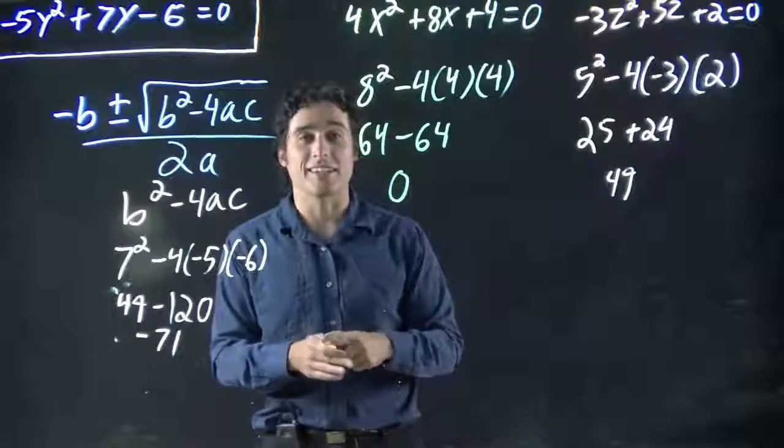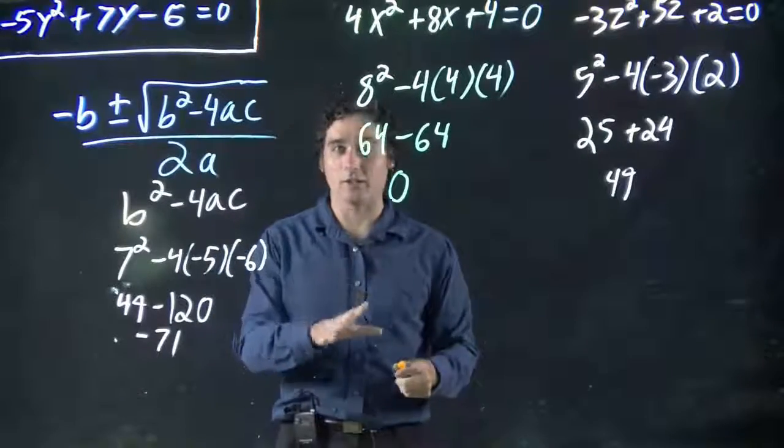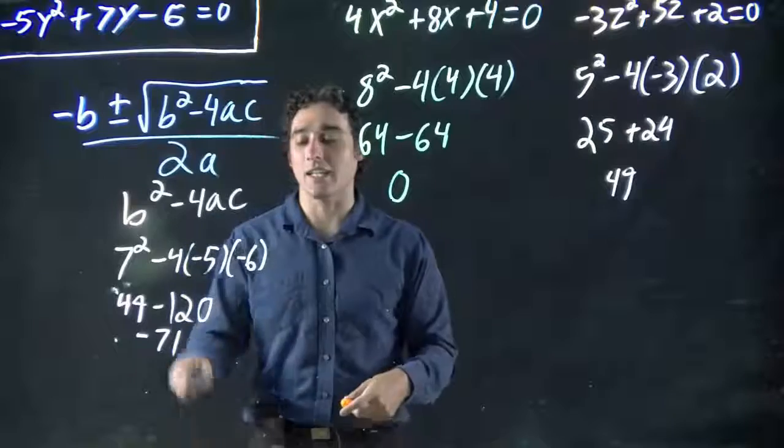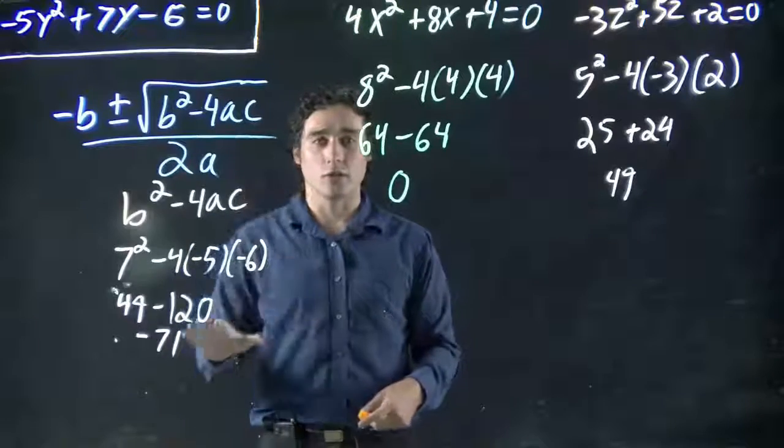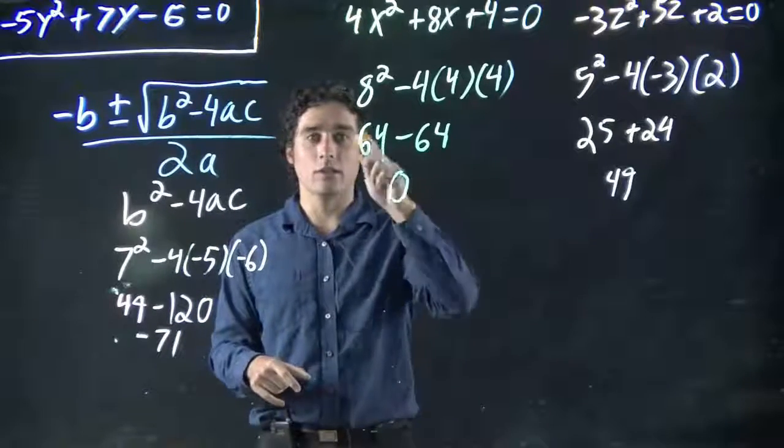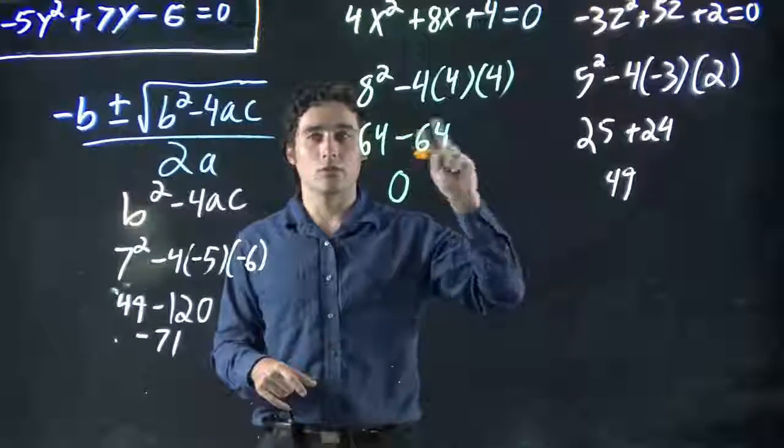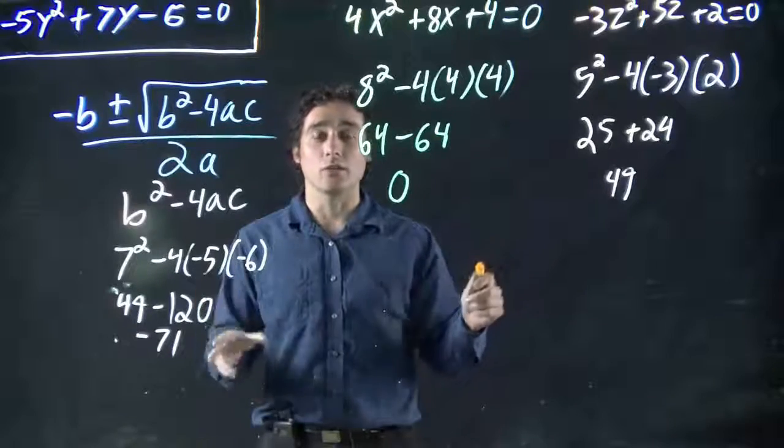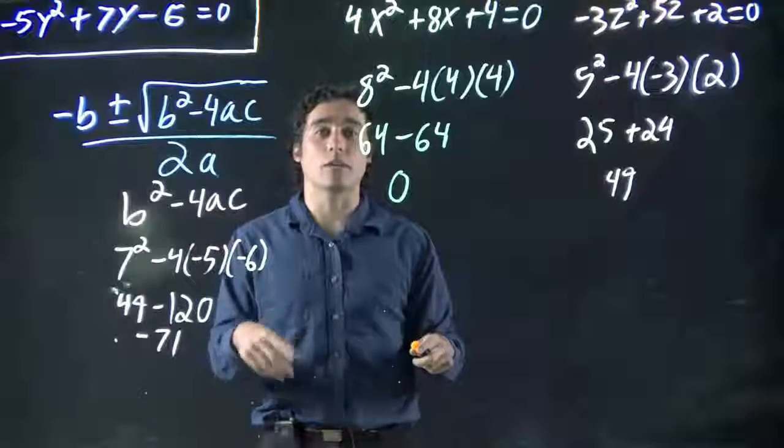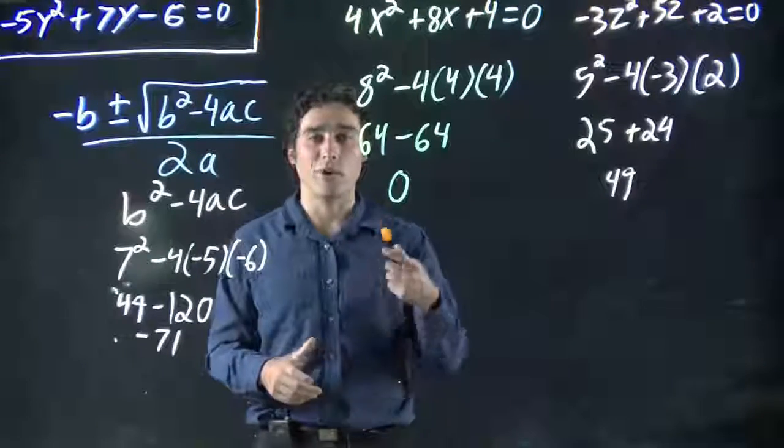So a lot to consider. Maybe one last final review just to keep emphasizing it. Negative, no solutions. Zero, one solution. A positive number, two possible solutions by using the discriminant which is b squared minus 4ac. So hopefully that helps.